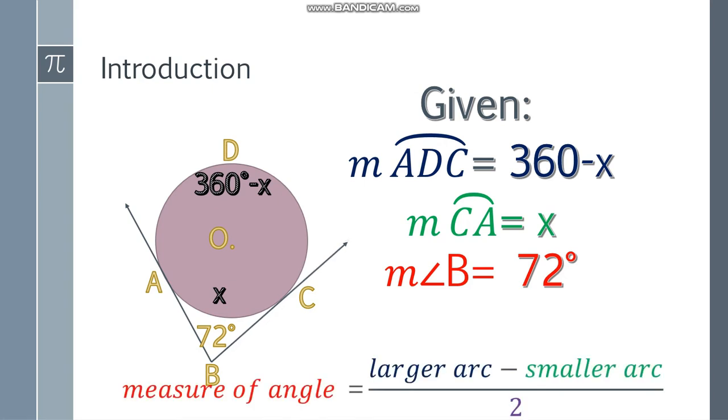Now, let's place the formula. The measure of the angle is the larger arc, which is 360 minus x, minus the smaller arc, which is x. And the answer to that one, we have to divide it by two.